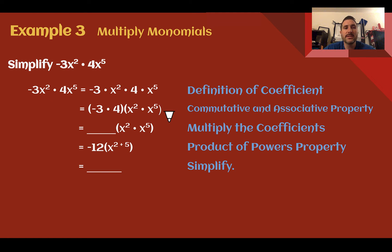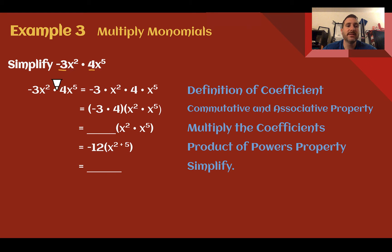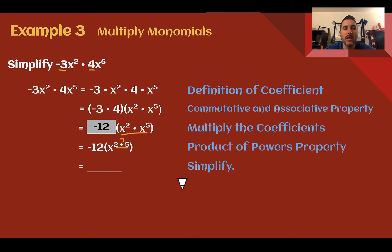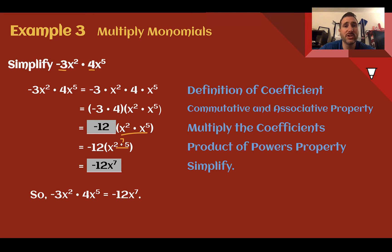Example 3: Multiply monomials. Simplify negative 3x squared times 4x to the fifth power. You're going to follow the product of powers property and then multiply the coefficients — the numbers out front. Negative 3x squared is negative 3 times x squared times 4 times x to the fifth. Using the commutative and associative properties, multiply the coefficients: negative 3 times 4 is negative 12. Then apply the product of powers property: x squared times x to the fifth, same base multiplied, add the exponents — 2 plus 5 is 7. So my answer is negative 12x to the seventh power.